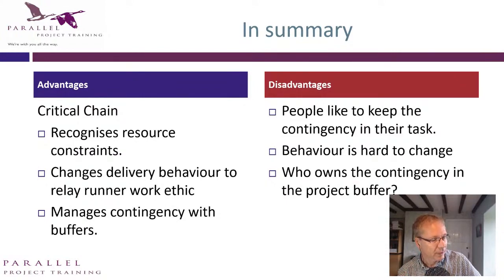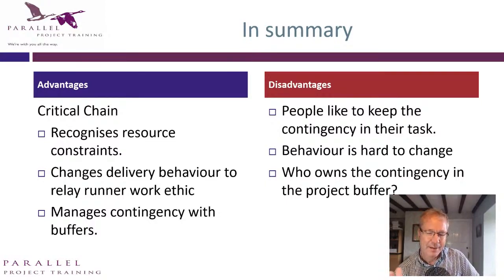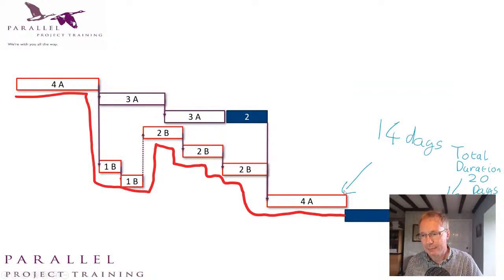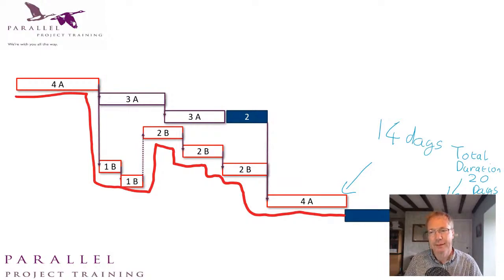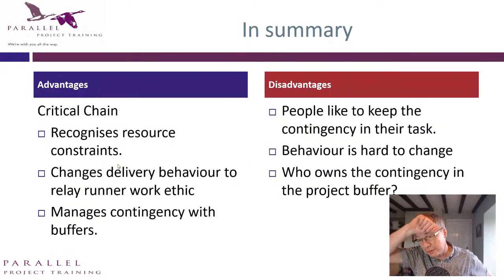The disadvantages are: people don't like giving up their contingency. If I say you've got an assignment due Friday and I want it Wednesday, you'll ask why — those are your two days and you don't want to give them up. Getting people to behave differently is really hard. Getting this relay runner work ethic going is difficult because people are used to hitting their own target. The other issue is who owns the contingency at the end — if you present it to a customer and say it could be done in 14 days but we have a buffer of six, they'll want it in 14 days. Putting a contract behind it gets difficult because the contingency should be shared with the whole team.